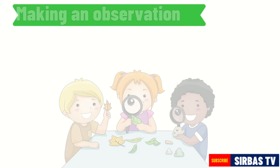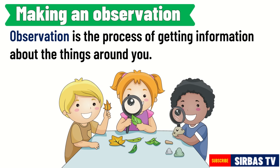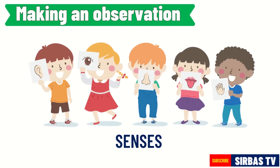The first step of the scientific method is making an observation. Observation is the process of getting information about the things around you. What do you use to observe the things around you? If your answer is senses, then you are right. These senses include the sense of hearing, sense of sight, sense of smell, sense of taste, and sense of touch.